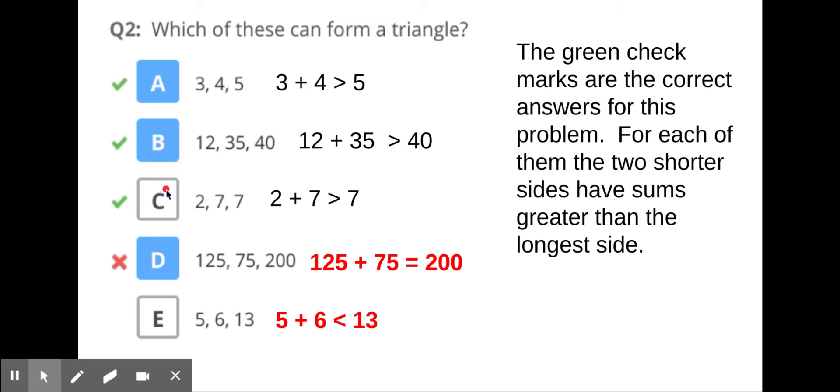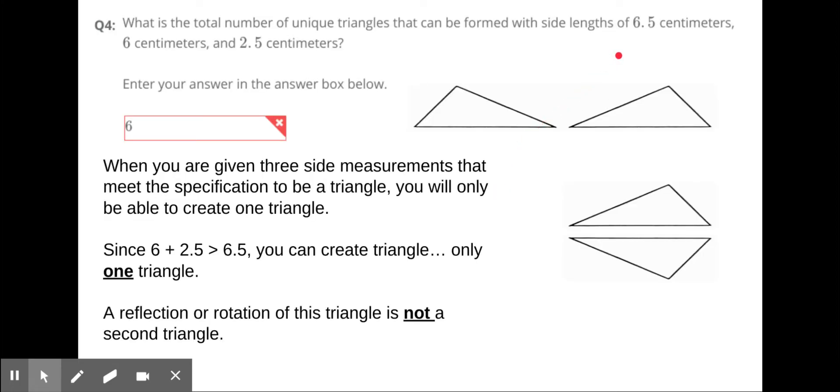The two shorter sides have to have sums greater than the longer side - that's the only way it's gonna work. Let's talk about the next slide. Question 4: What is the total number of unique triangles that can be formed with side lengths of 6.5 centimeters, 6 centimeters, and 2.5 centimeters? You can only form one triangle, only one.